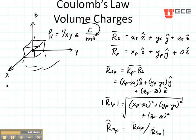And then we're going to do the same thing that we did before. We're going to write a little differential element of electric field which is going to be Rho V DV divided by 4 Pi Epsilon magnitude squared unit vector.